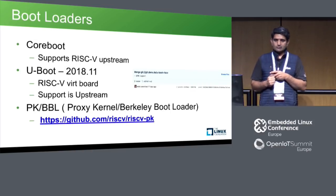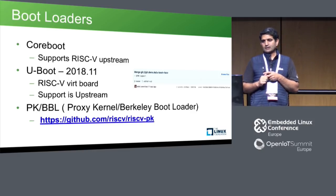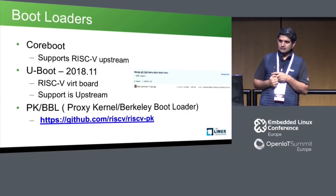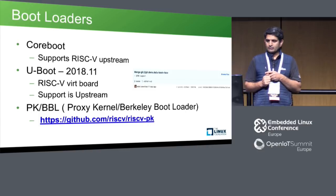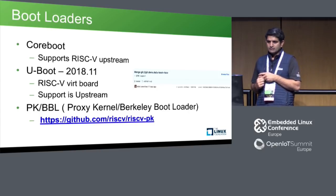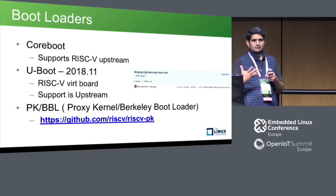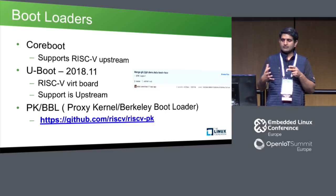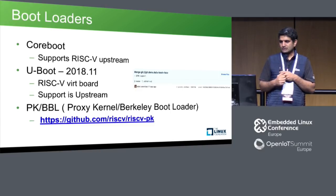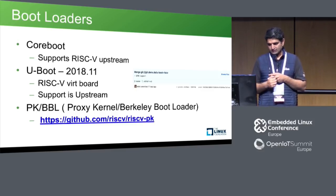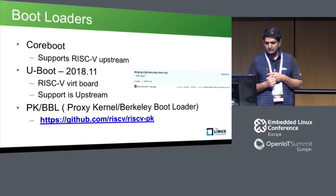For bootloaders, CoreBoot got its RISC-V support very early on, in 2016. U-Boot has recently accepted the VIRT board support upstream. The proxy kernel and Berkeley bootloader are the original bootloaders for the RISC-V spike platform, used even to bootstrap the Linux kernel right now, and they are available on the RISC-V GitHub.